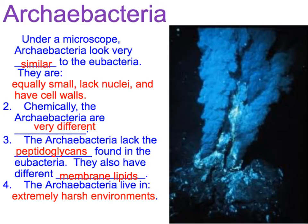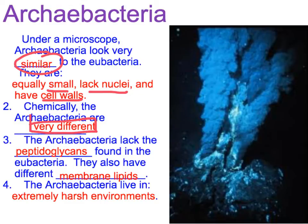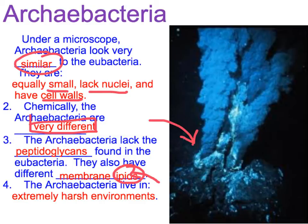The archaeabacteria, under a microscope, look very similar to eubacteria — small, no nucleus, and they do have a cell wall. But chemically they are very different. They don't have the peptidoglycans found in eubacteria, and they have a different membrane lipid. Remember, lipids are the fats and oils that help cover the membranes to keep them safe. They live in very harsh environments, like deep in the ocean with near-volcanic activity.